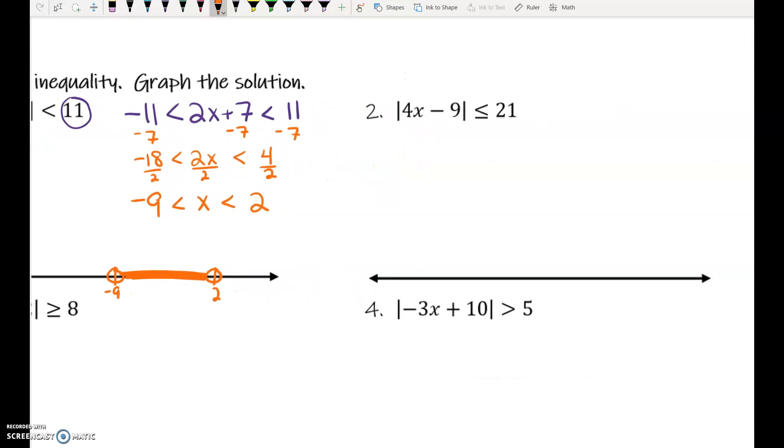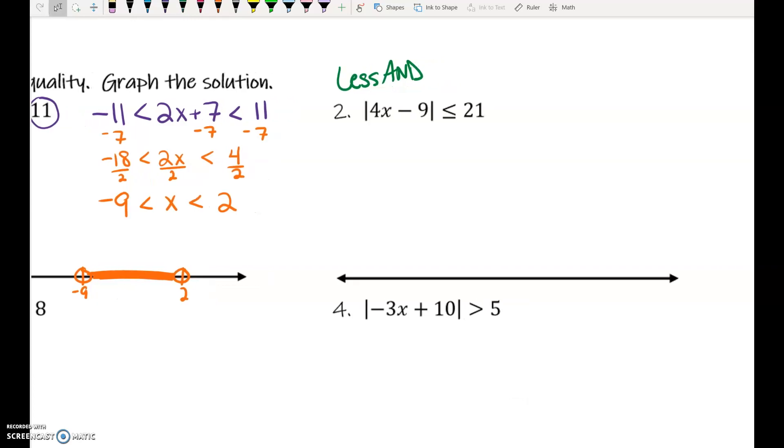All right, let's try number 2. Number 2 is another less than, but this time it's less than or equal to. Anyone want to be brave? How do we set this up? I'm hearing some mumblings. Negative 21, less than or equal to 4x minus 9, less than or equal to 21.